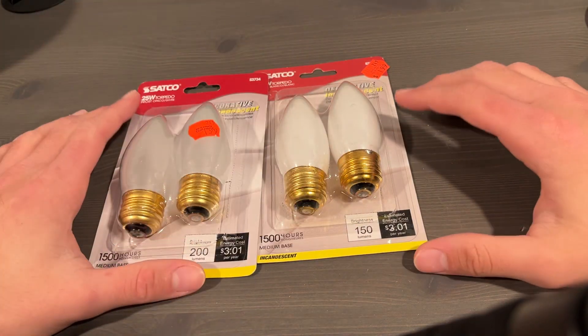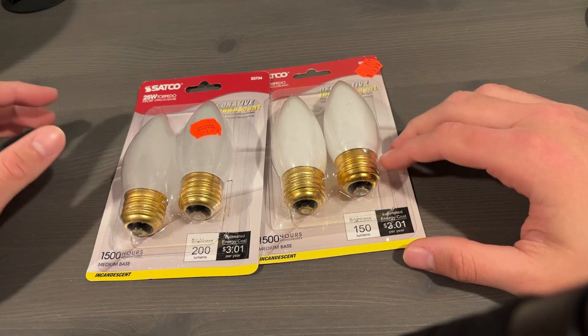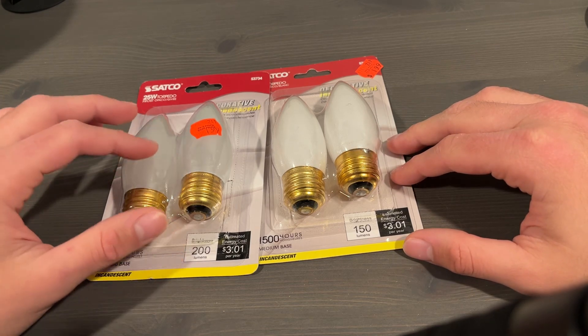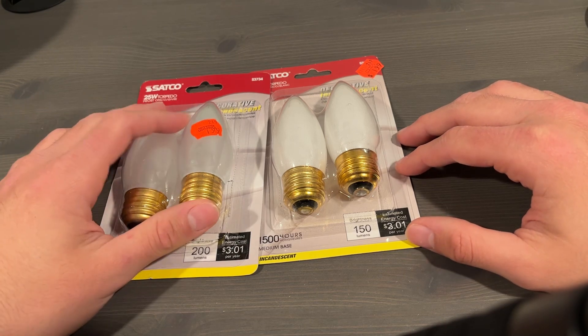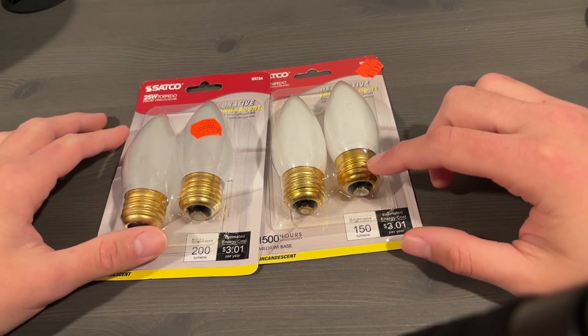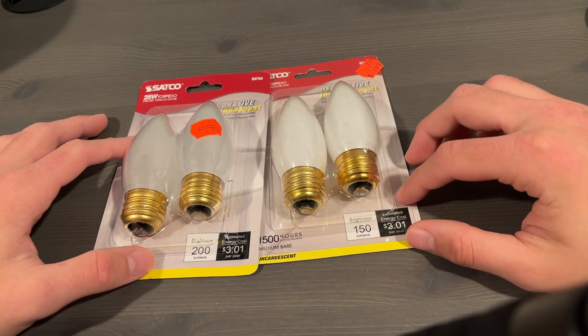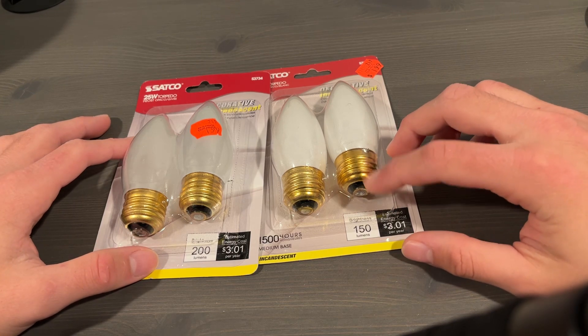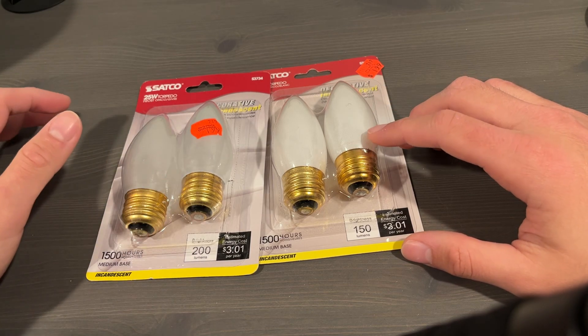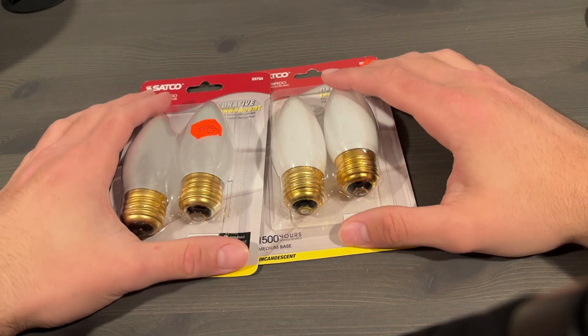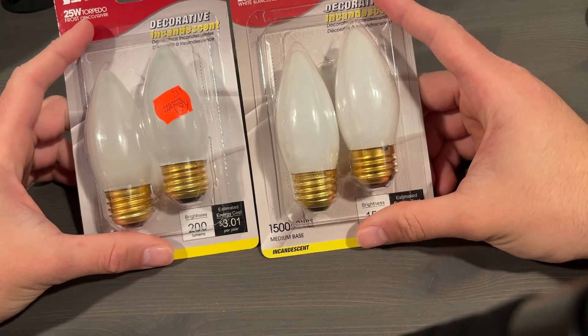Now, in front of us here, I have two packages that kind of look similar. They're the same bulbs, but with different coatings. They're both Satco 25 watt torpedo medium-based incandescent bulbs, but the ones on the left have a frosted coating, and the ones on the right have a white coating. Now, you might even be able to tell the difference when they're off. The white ones look white, and the frosted ones actually have more of a gray tinge to them. But other than that, they're identical, and I'm going to obviously show the differences when they're on.